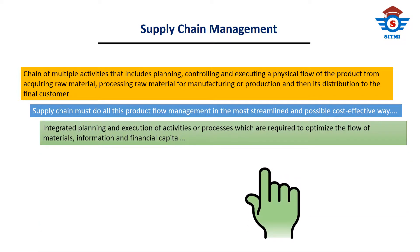Simply, we can say that supply chain management is an integrated planning and execution of activities or processes which are required to optimize the flow of materials, information and financial capital.